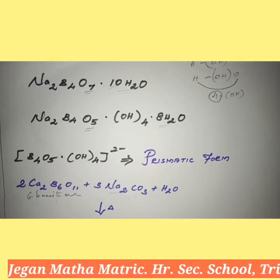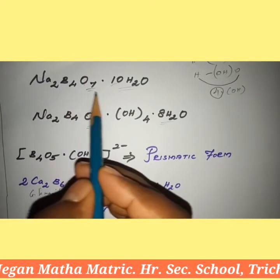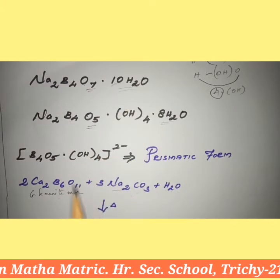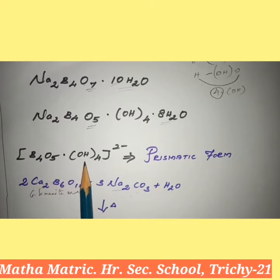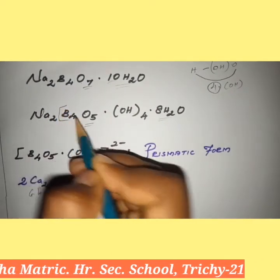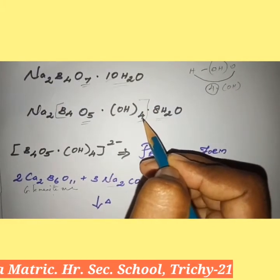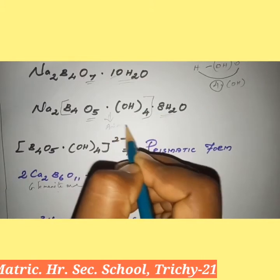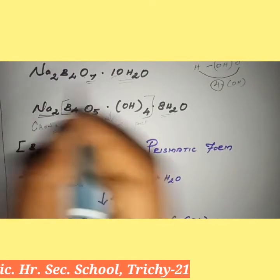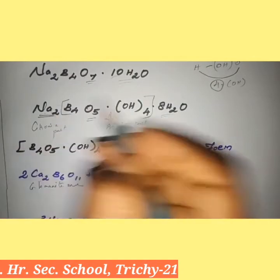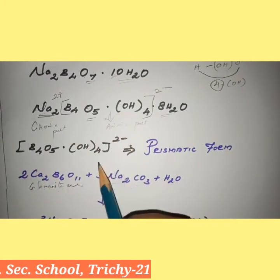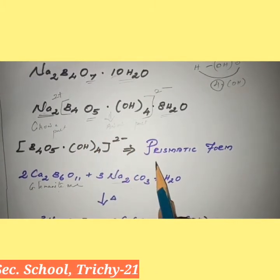The reaction produces Na₂B₄O₇ (borax) plus calcium carbonate plus calcium hydroxide. Borax is normally formulated as Na₂B₄O₇·10H₂O, but it contains tetranuclear units that is [B₄O₅(OH)₄]²⁻. This is the anionic part. The structural formula shows Na₂²⁺ paired with the [B₄O₅(OH)₄]²⁻ anionic part. This structure is called the prismatic form.